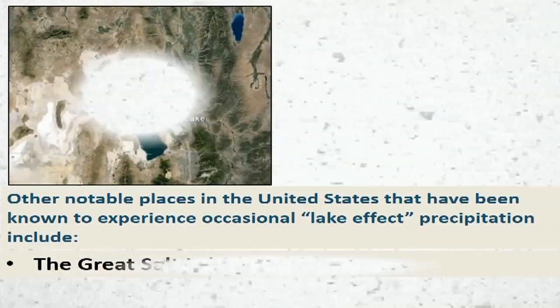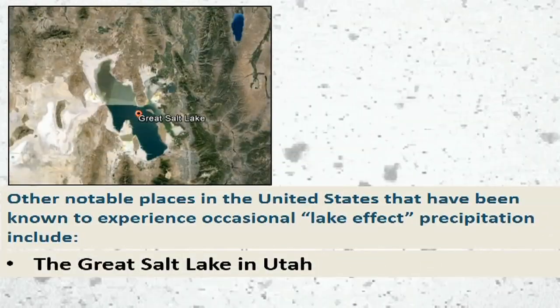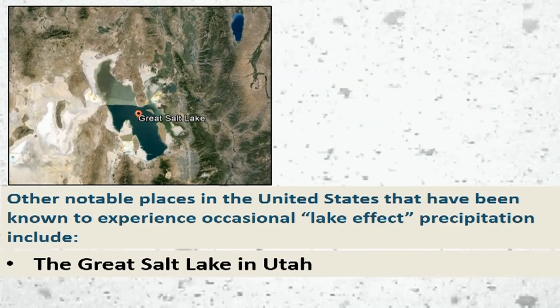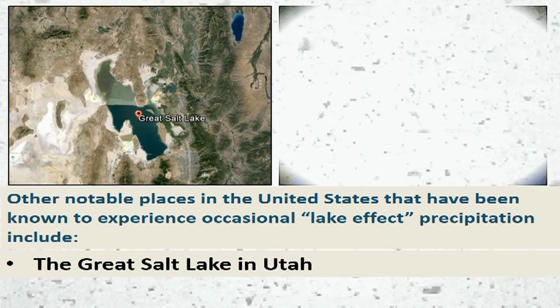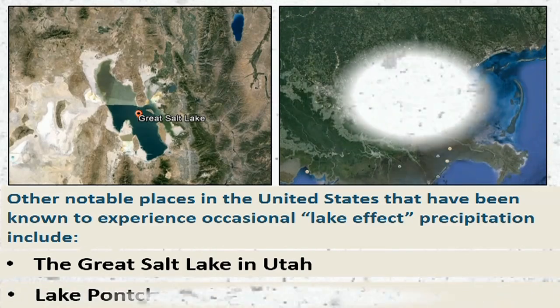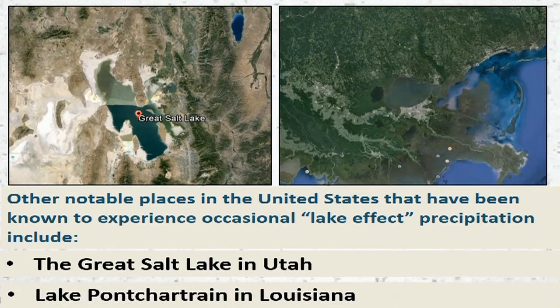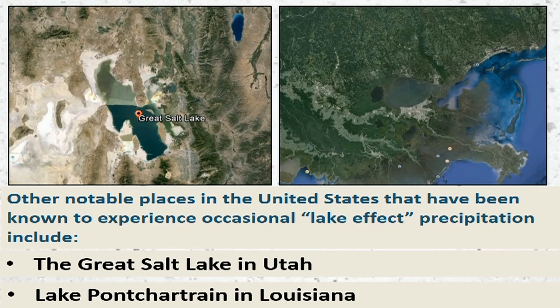A few other notable places in the United States that have been known to experience occasional lake effect precipitation include the Great Salt Lake in Utah and also Lake Pontchartrain in Louisiana.